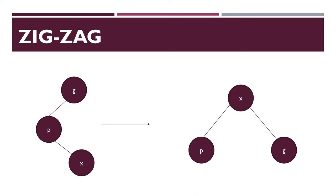Zig-zag rotation — here is the example. There are three nodes: G, P, and X. First, we need to perform zig rotation. Then the first node is G, next is X, after that P — X and P are replaced. Then perform zag rotation, just move node G to the right side. So this is zig-zag rotation.